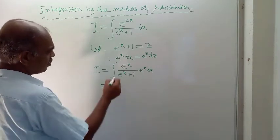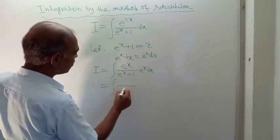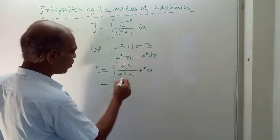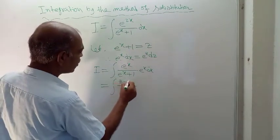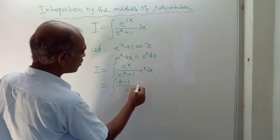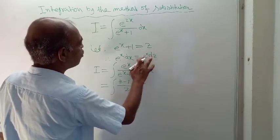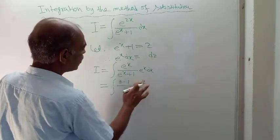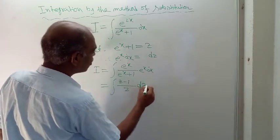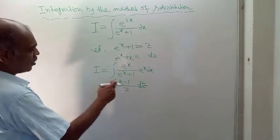The denominator e to the power x plus 1 is z. From the substitution, e to the power x equals z minus 1. So the numerator becomes z minus 1. And e to the power x dx equals dz — so only dz, not e to the power z dz. Therefore we have (z minus 1) divided by z, dz.